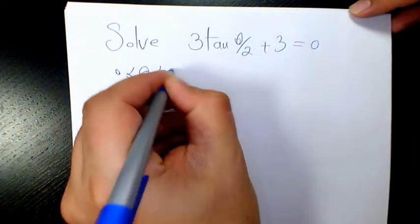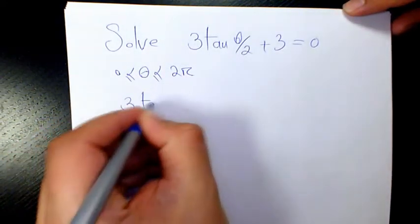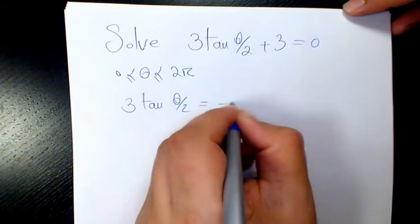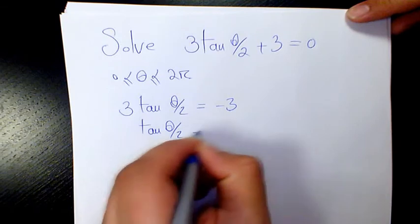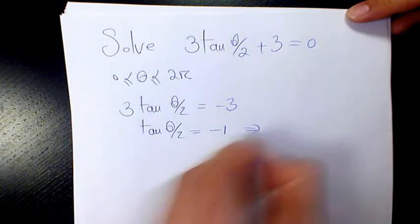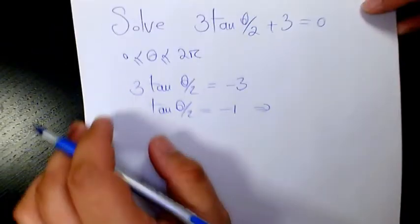So 3 tan(θ/2) equals negative 3. Then I divide both sides by 3, so it's going to be negative 1. So tan(θ/2) equals negative 1, and we know...